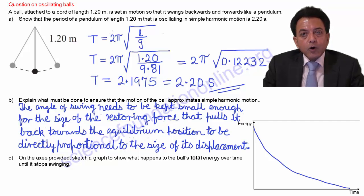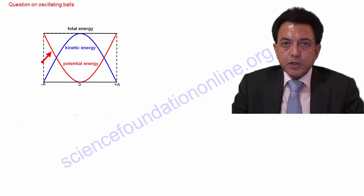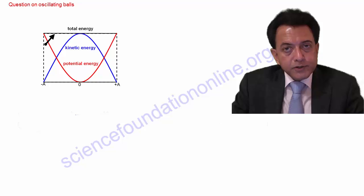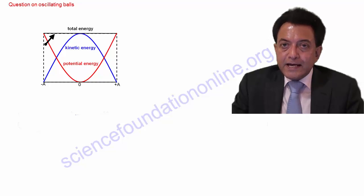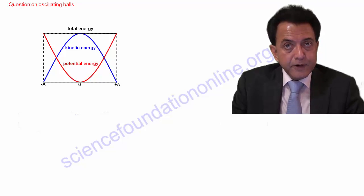We can also use this opportunity to discuss a graph that shows total energy, kinetic energy and potential energy for an ideal simple harmonic motion of any type. By ideal, I mean that there aren't any energy losses due to dissipative forces such as friction. This is why total energy stays constant, simply because energy isn't dissipated by having to do work against dissipative forces like friction.